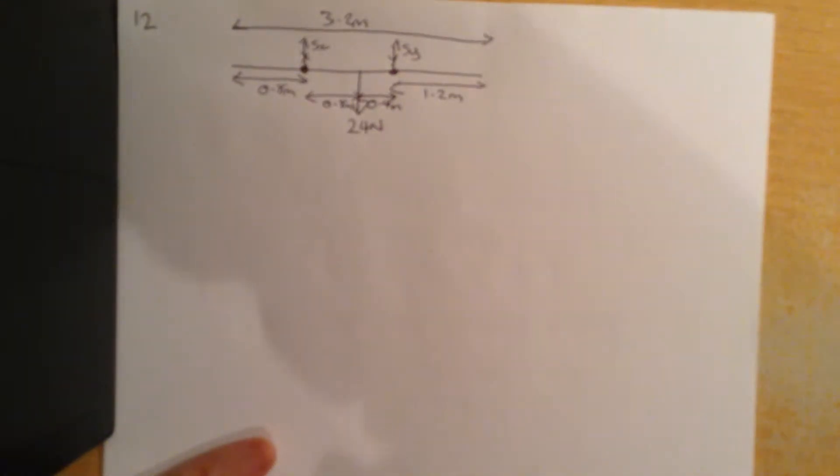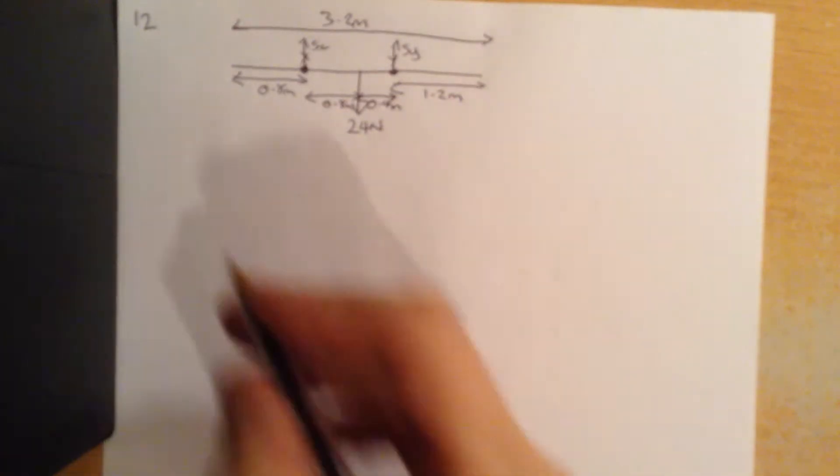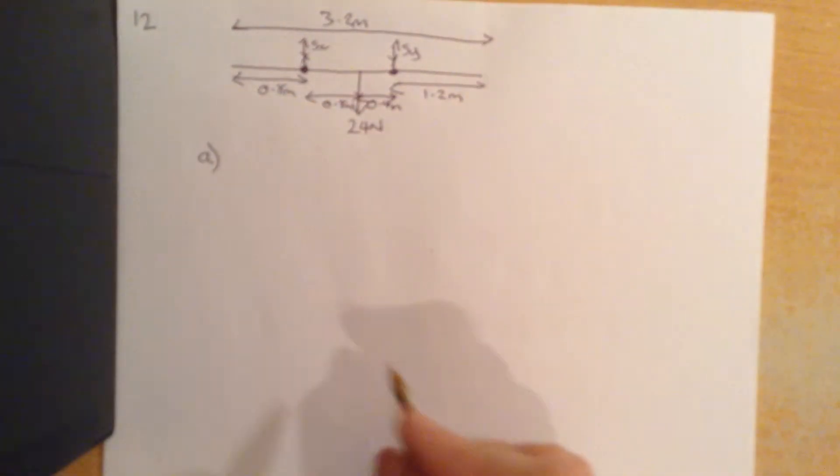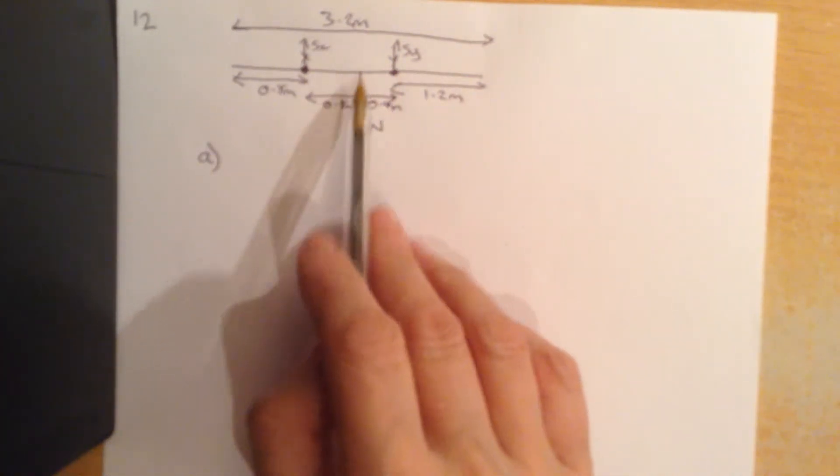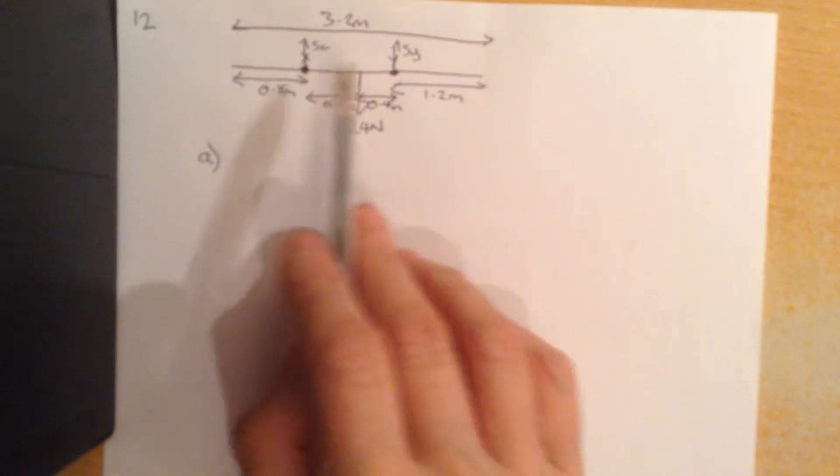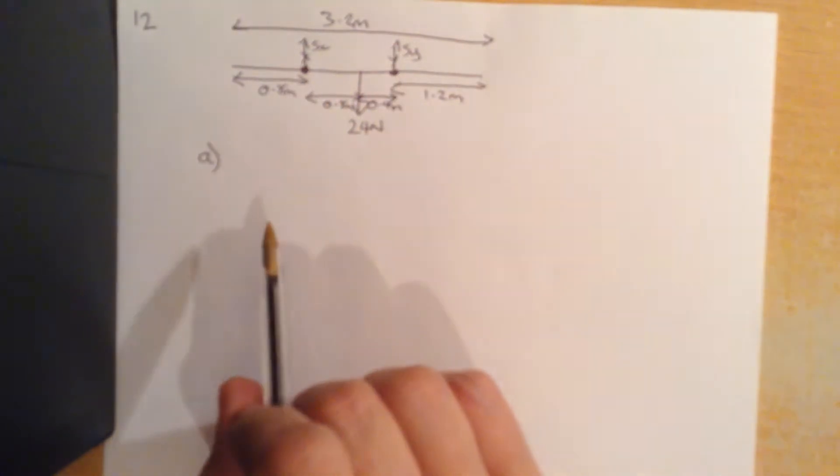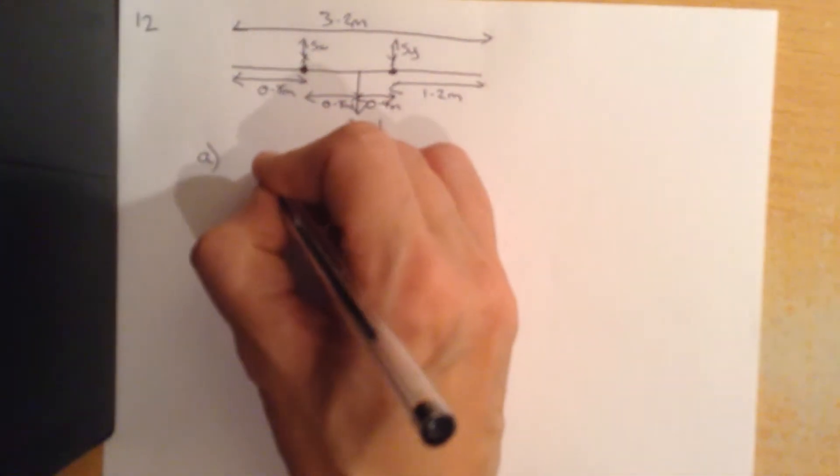First part says sketch a free body diagram for the arrangement and calculate the force on each support when there are no curtains on the pole. So no curtains, just as it is. We've got our two support forces, just the weight acting down.